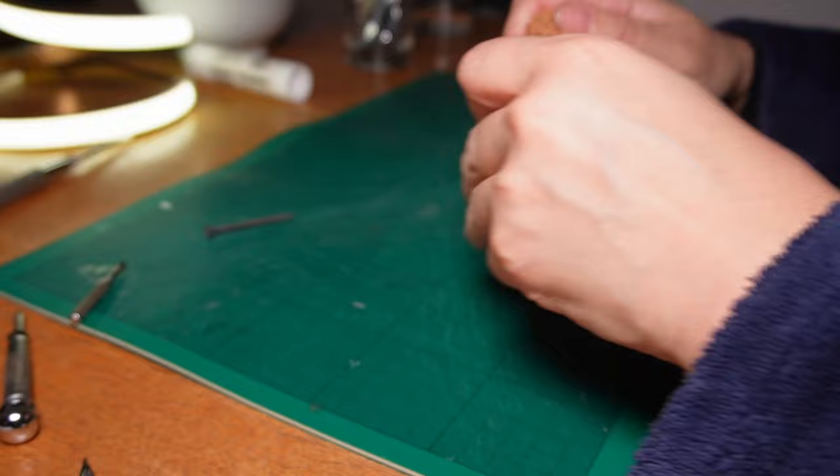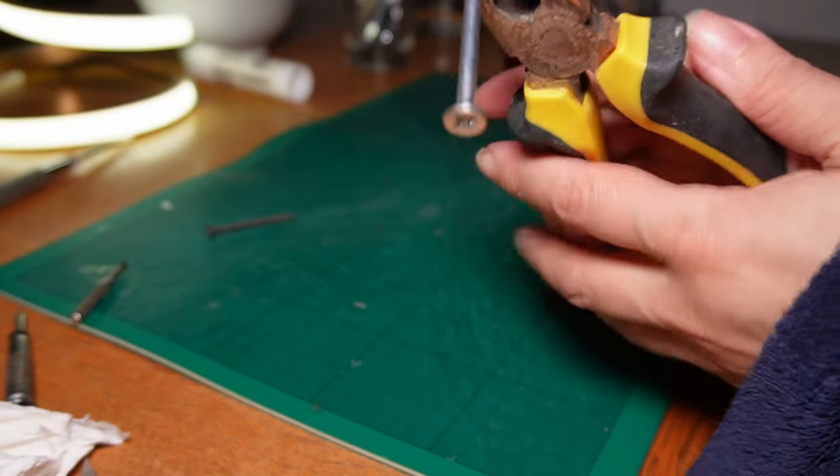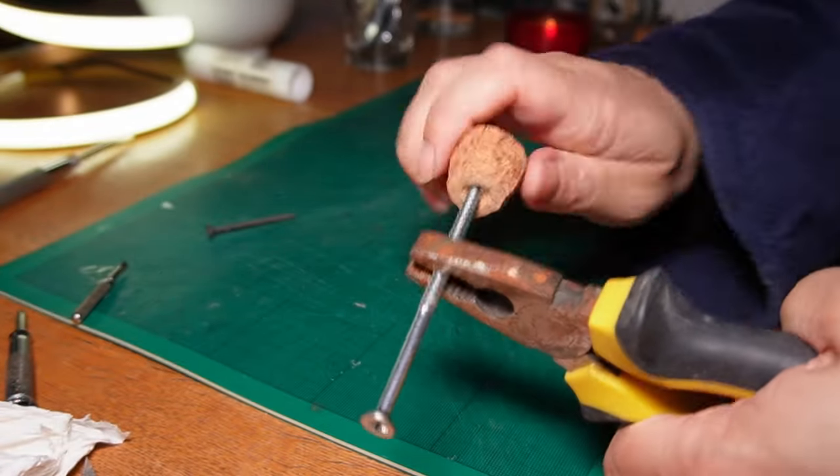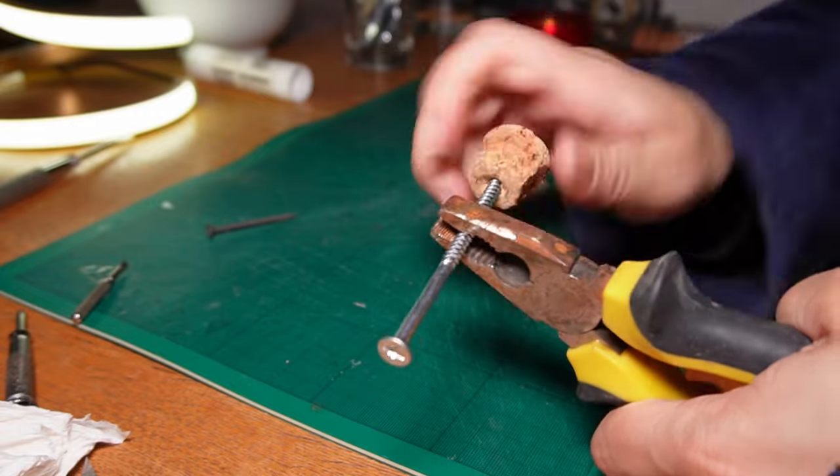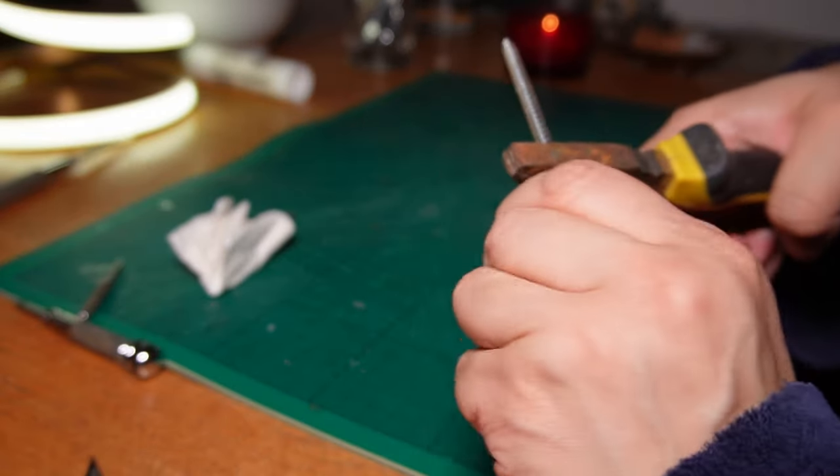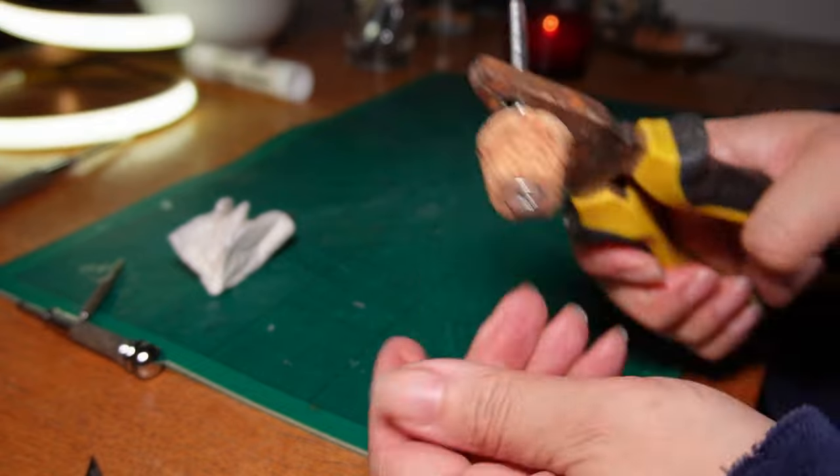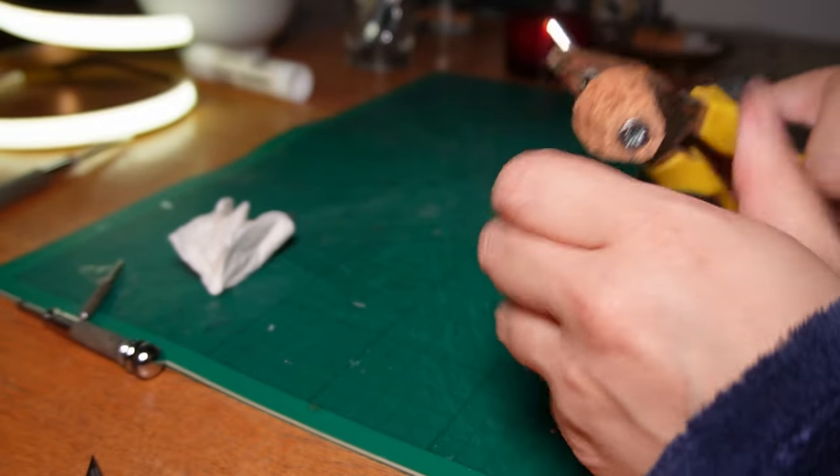It really started hurting my fingers though, so I grabbed a pair of pliers, and then holding the screw in the jaws of the pliers worked like a vice. Made the task really easy. Once I got the cork as far down the screw as it would go, I could see I needed to nibble out a little bit more, just to get it a bit deeper.